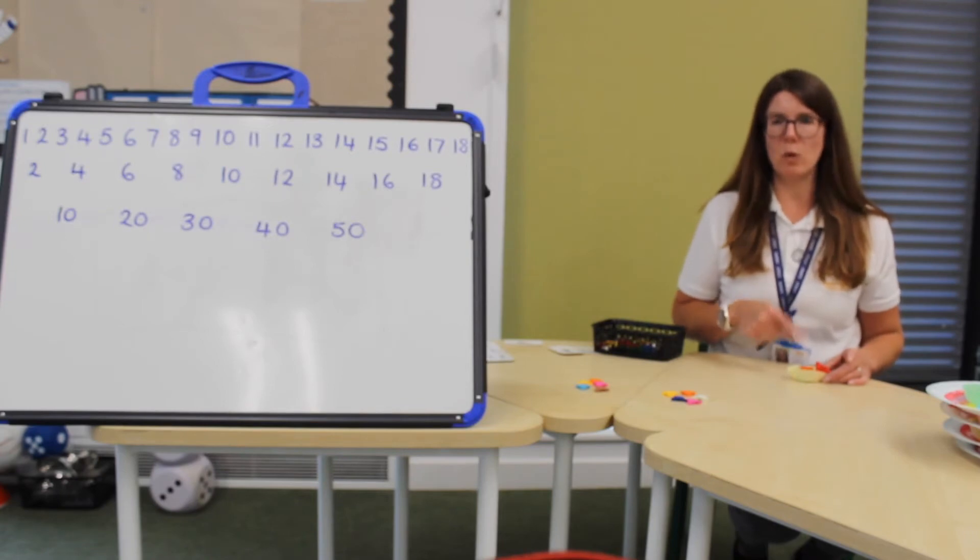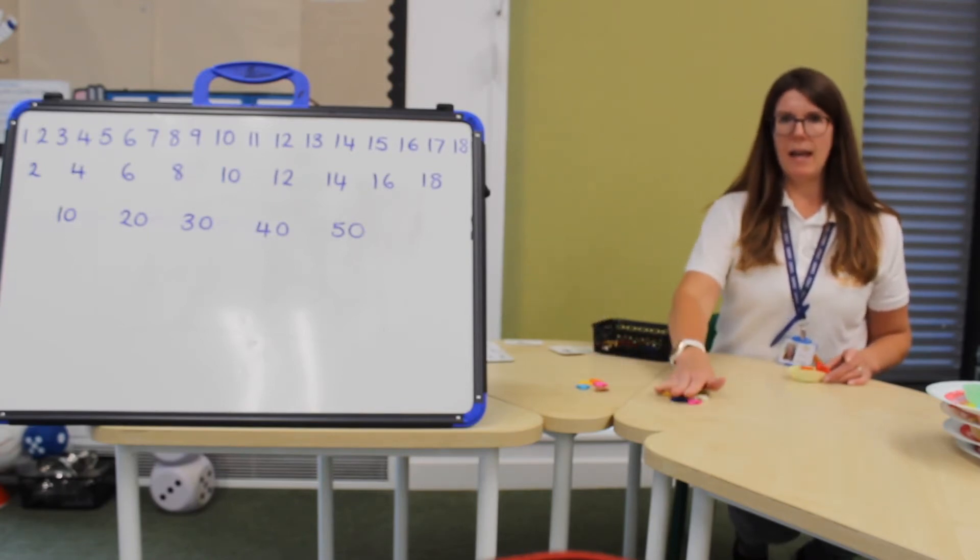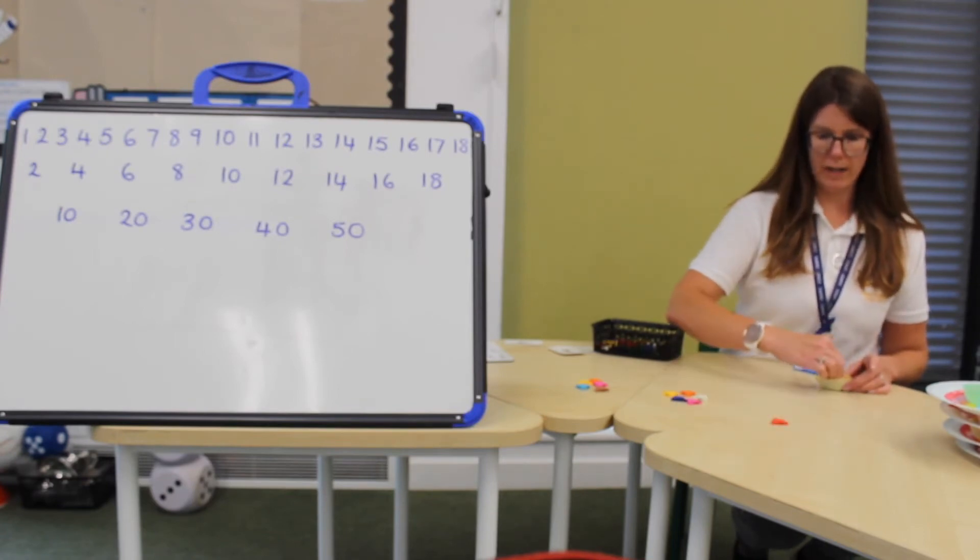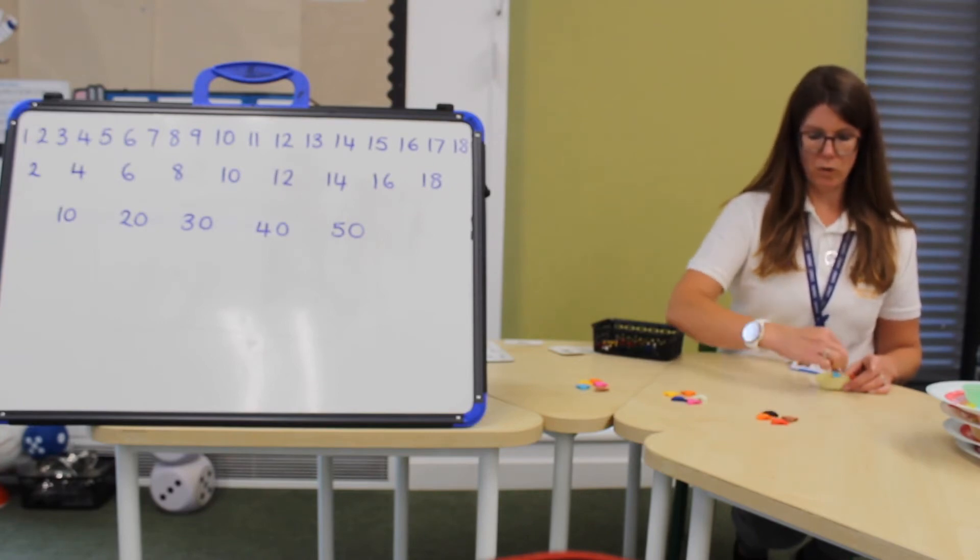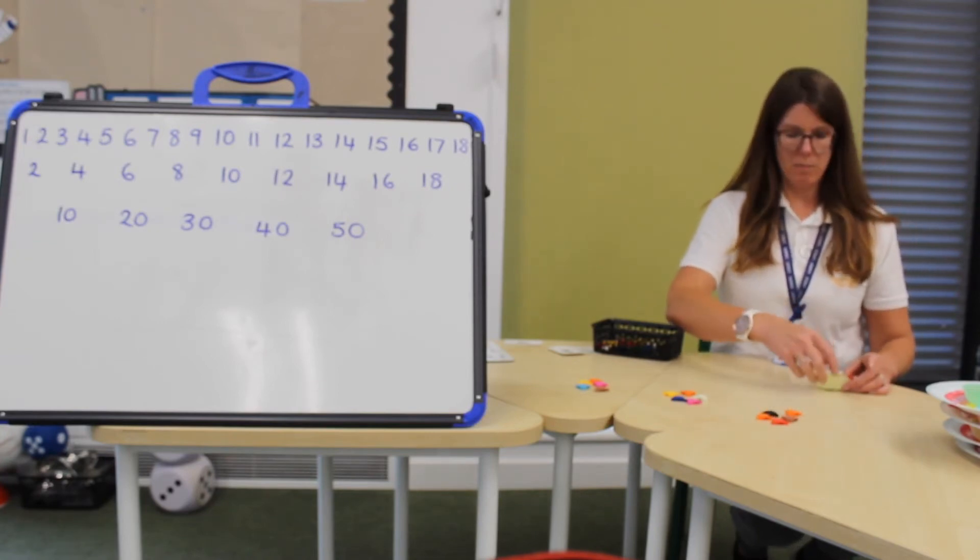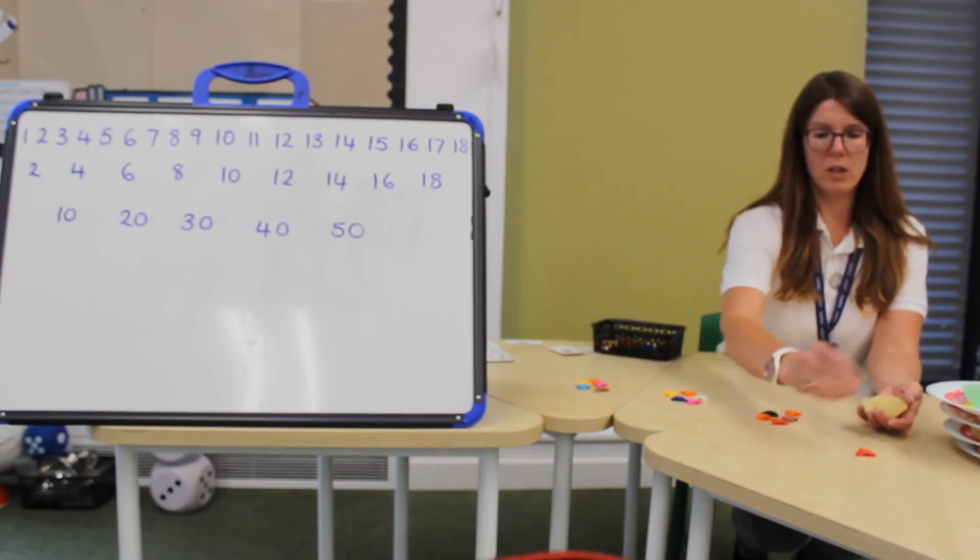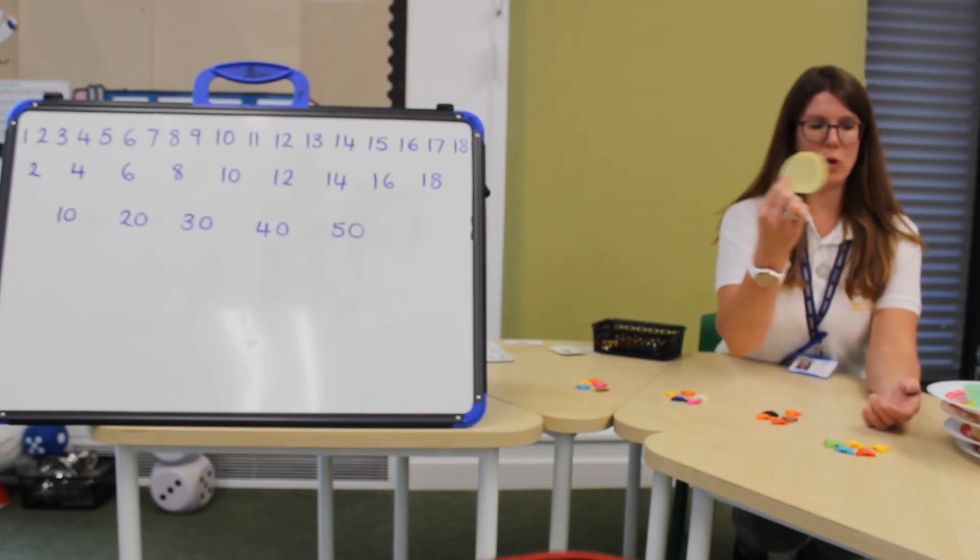I still have some more so I'm going to keep going. I have five here. Another five. Another group of one, two, three, four, five. I still have some more. I'm going to make another group of five. One, two, three, four, five. They've all gone.